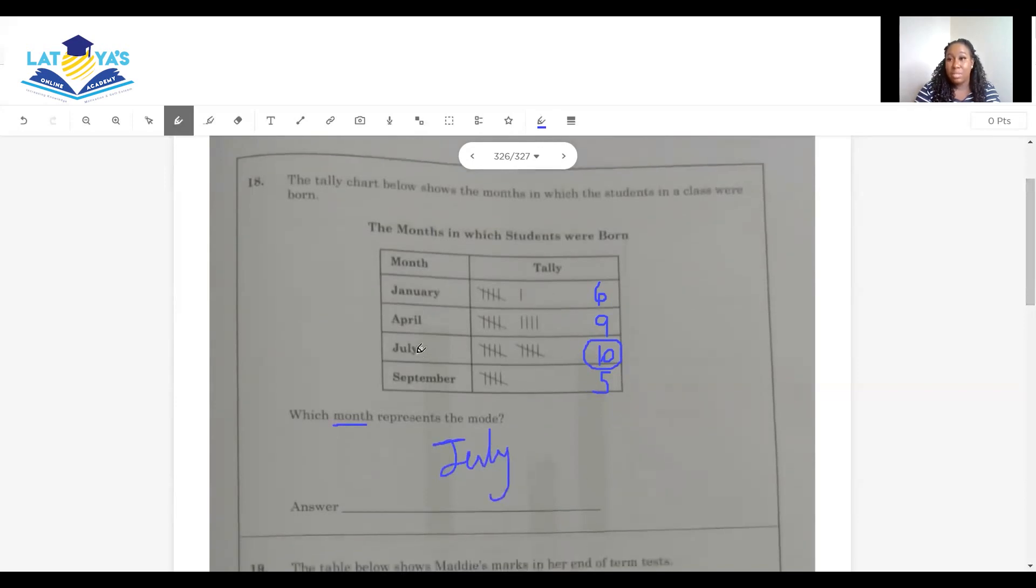Some people may not have gotten this. Some people might mix this up and actually put 10. But the question asks us, which month represents the mode? So the answer is July.